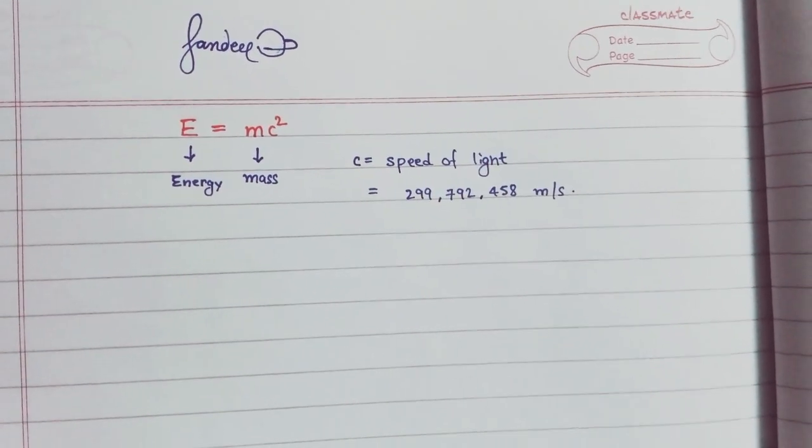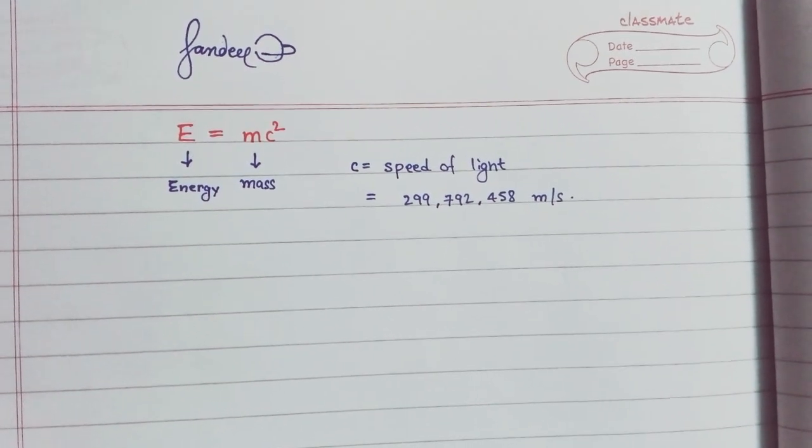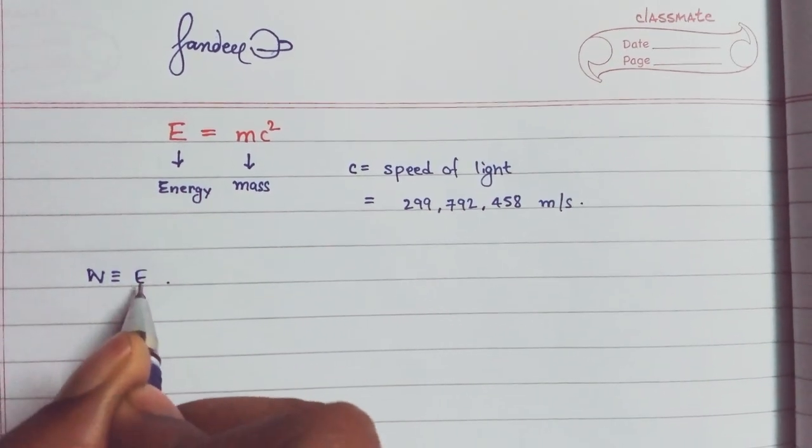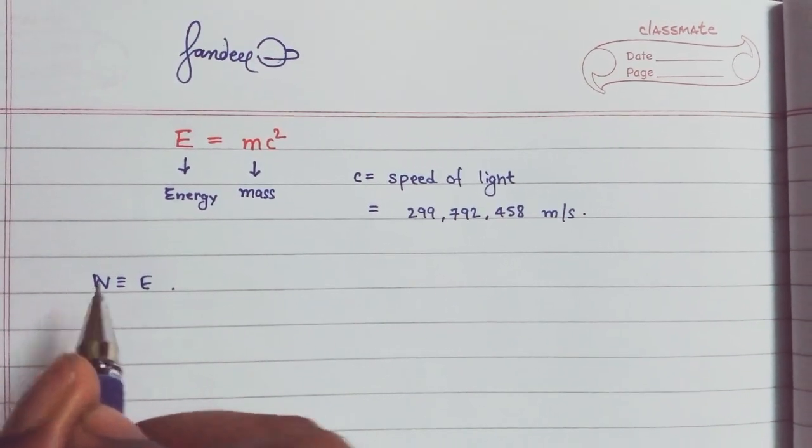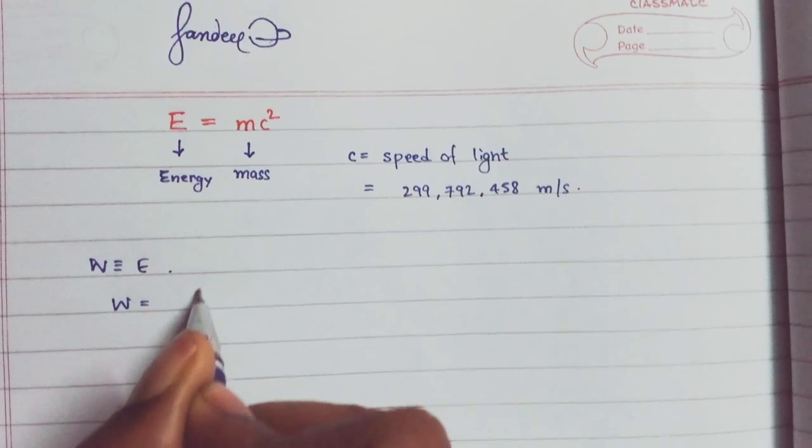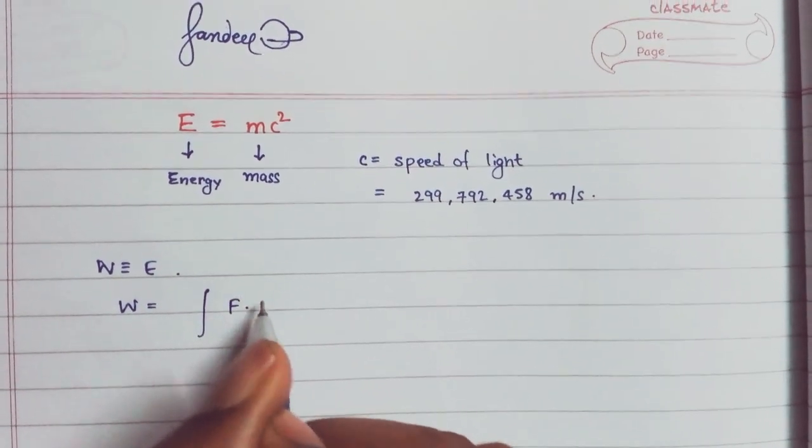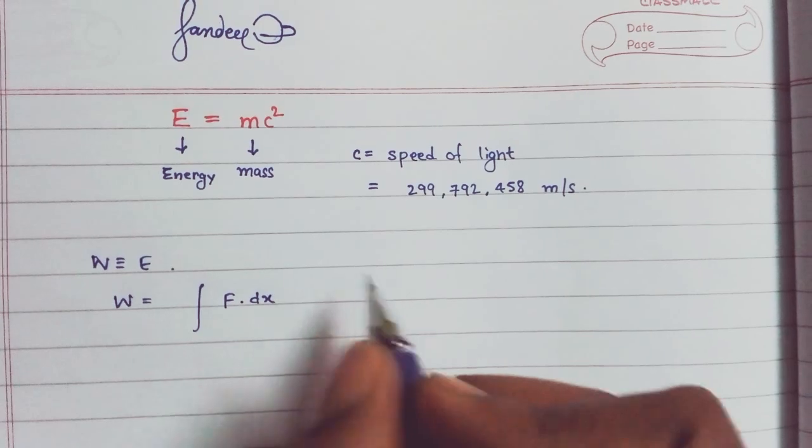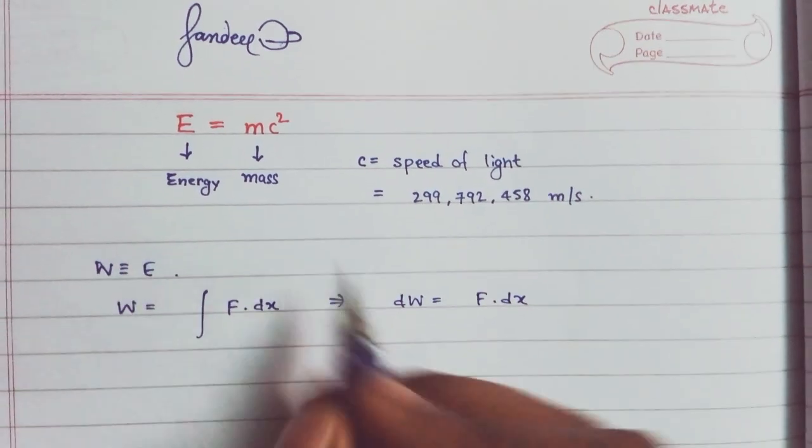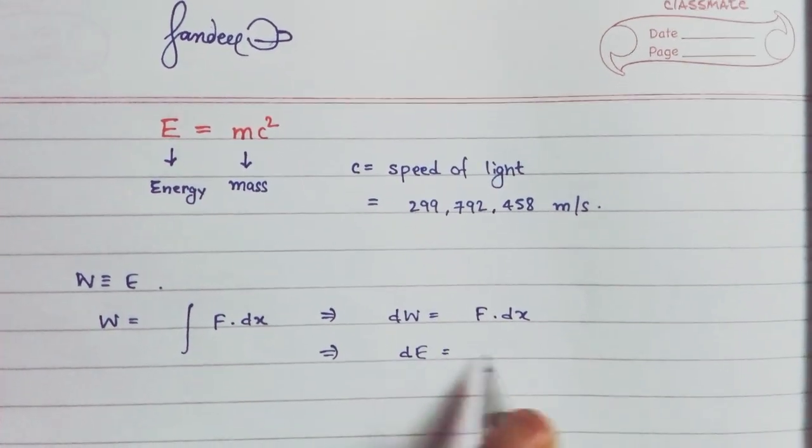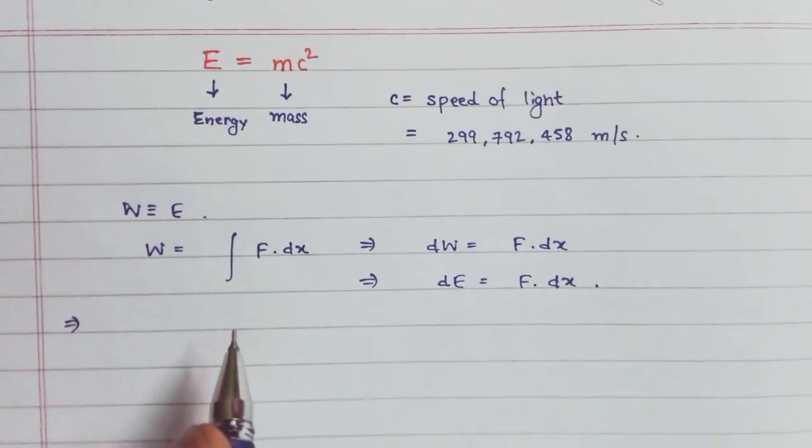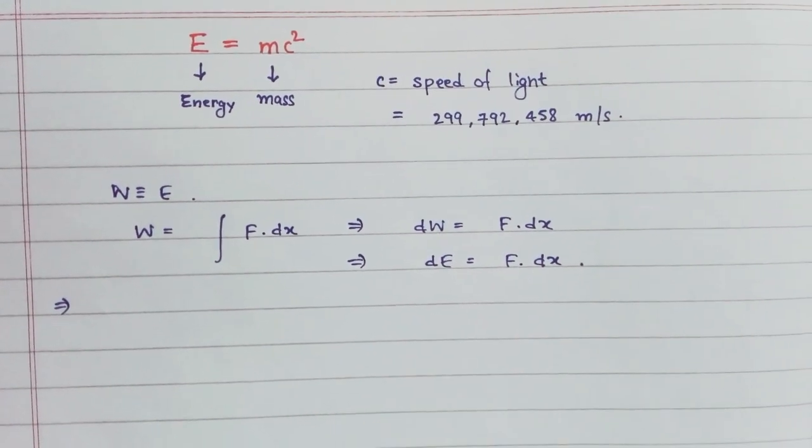Let's start with the work-energy equivalence principle. Work is equivalent to energy; energy is the ability to do work, and the change in work in a system is a measure of change in its energy. Work is the integral of F dot dx. We can write dW equals F dot dx. By this principle, we can write dE equals F dot dx.